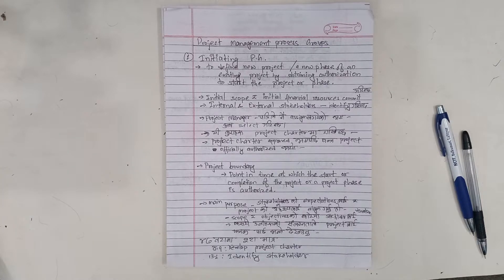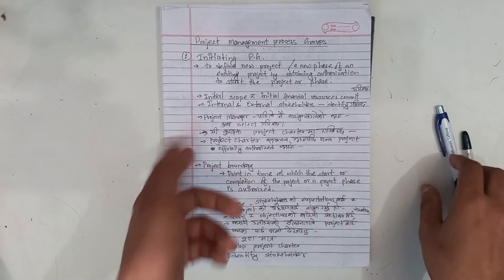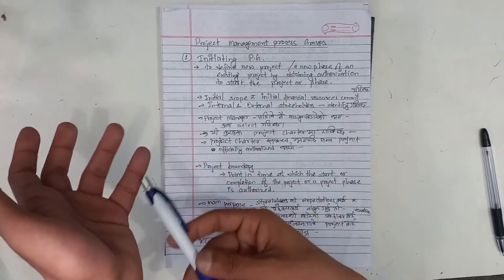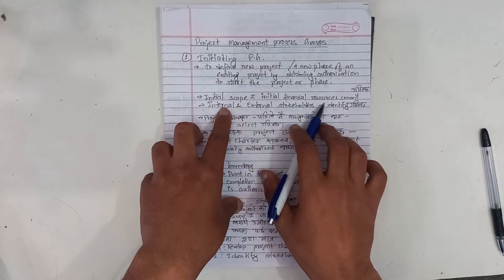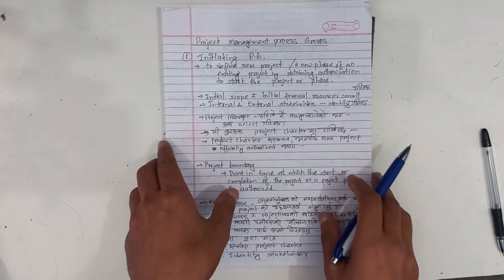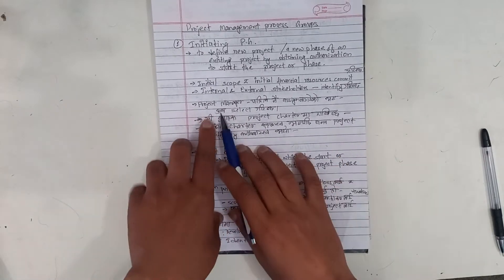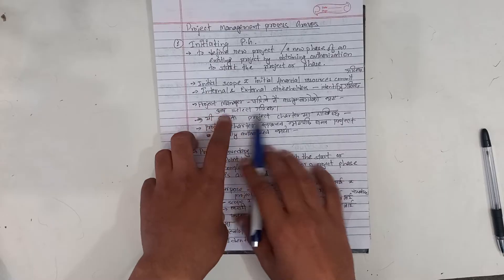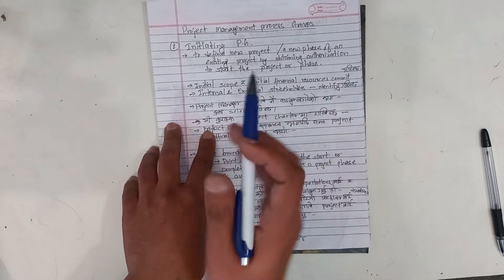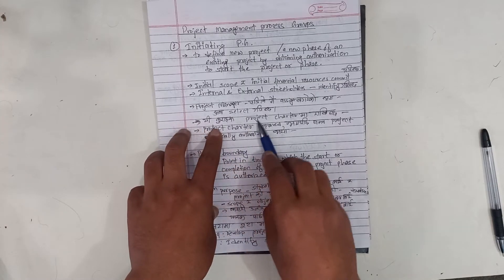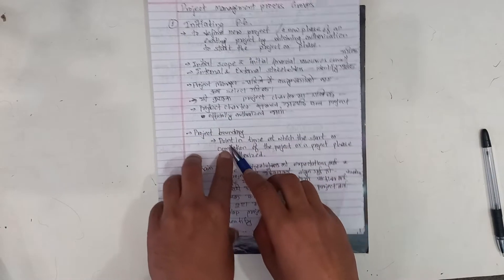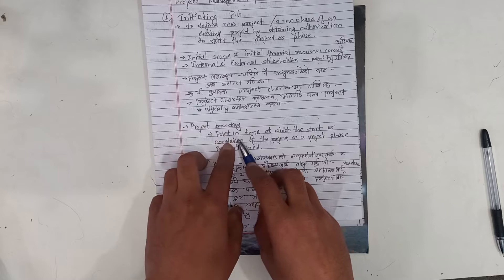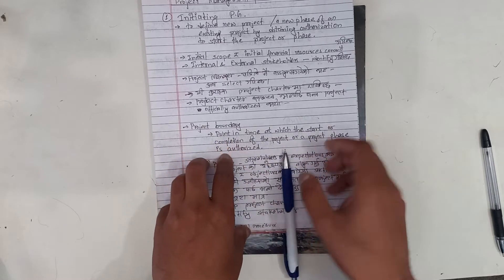To define a new project or a new phase of an existing project by obtaining authorization to start the project or phase. The new project begins or the existing project begins. Initial scope and initial financial resources are committed. Internal and external stakeholders are identified. The initiating phase is the entry point. This is the project charter — the project charter is approved and the project is officially authorized. The project boundary is the point in time at which the start or completion of the project or project phase is authorized.